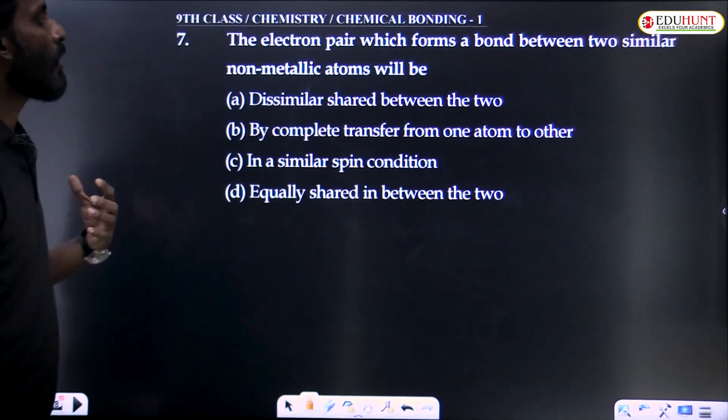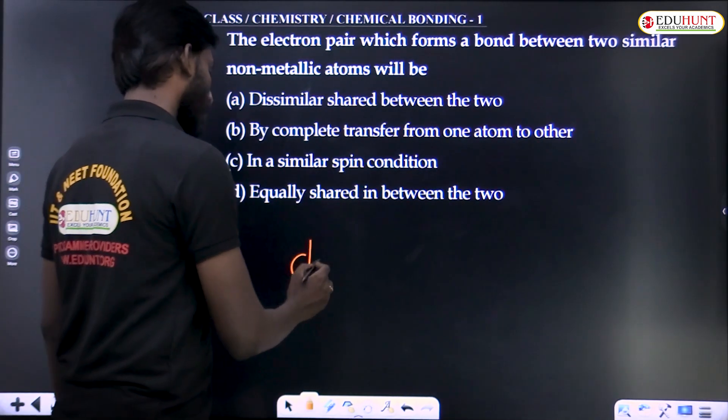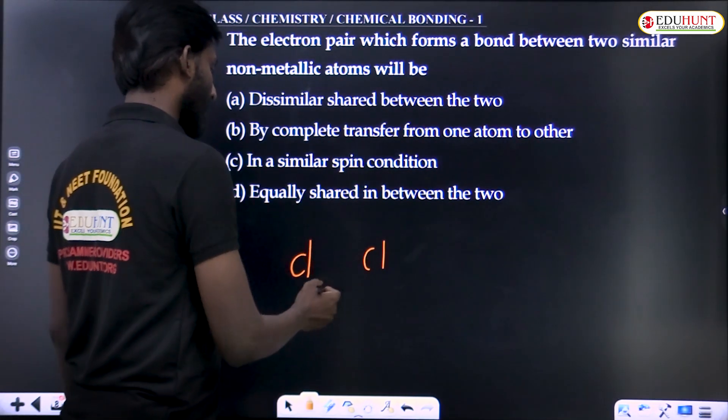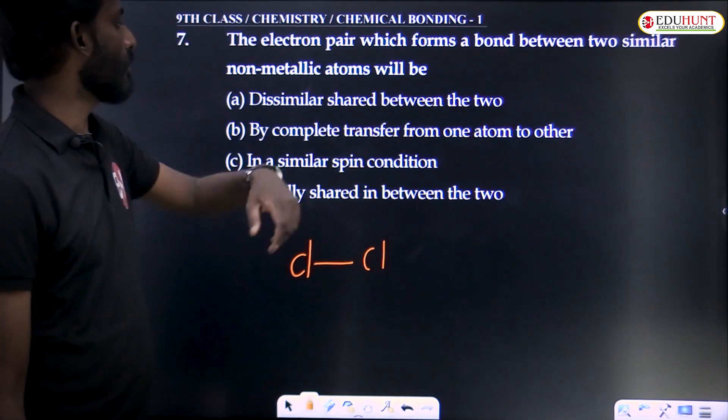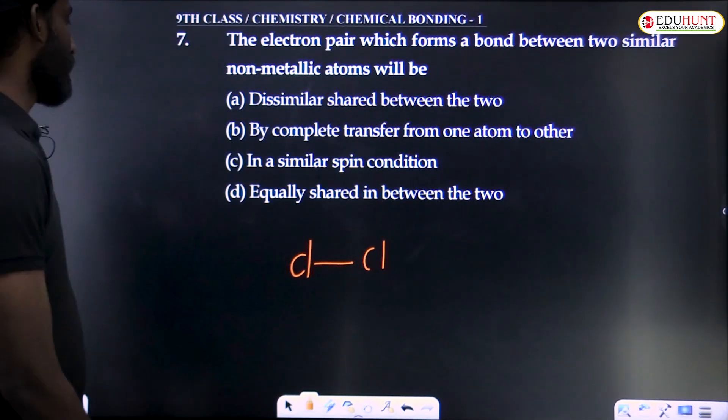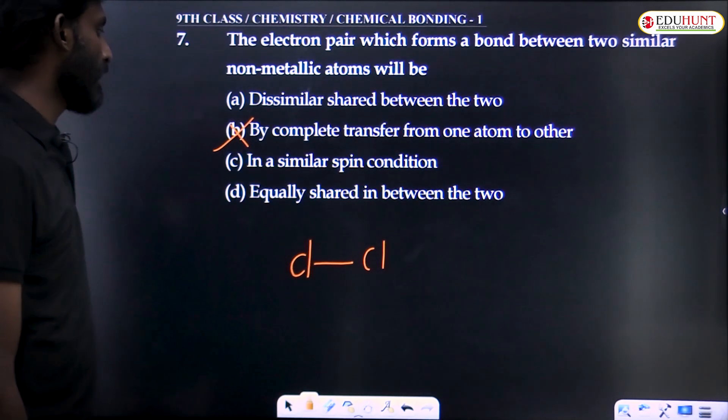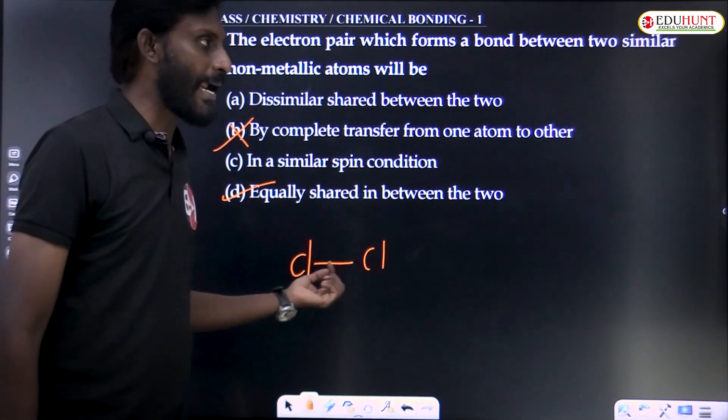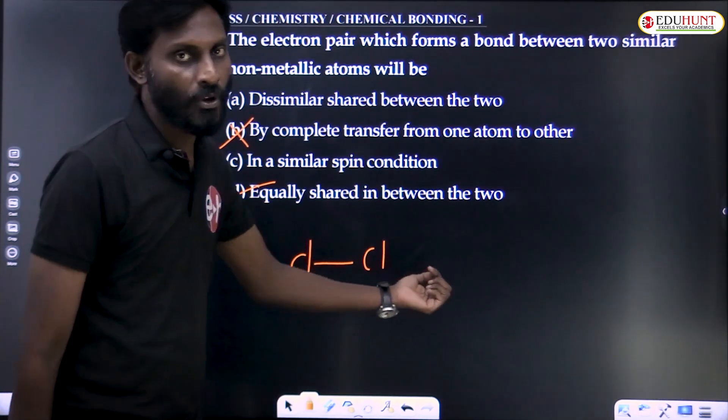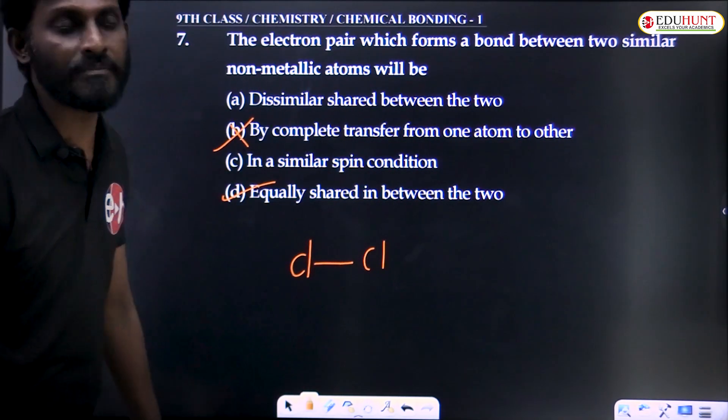The electron pair which forms a bond between two similar non-metallic atoms - chlorine, chlorine - two non-metal atoms between which a bond forms. It's not by complete transfer. Similar atoms, equal sharing between two. This is correct. Two atoms are same, two non-metals, the pair is equally shared.